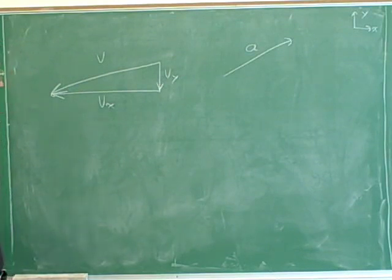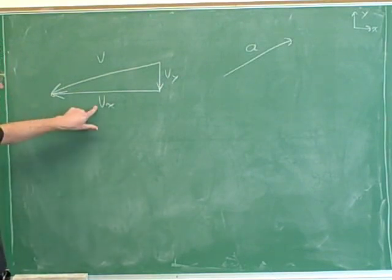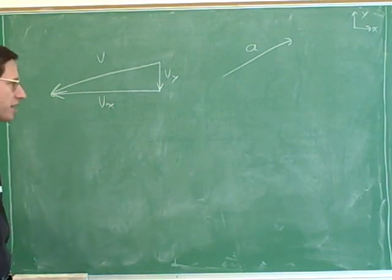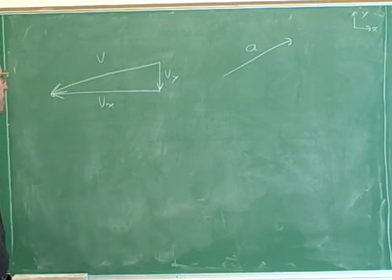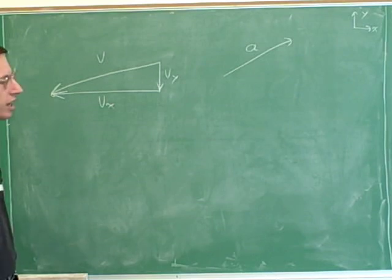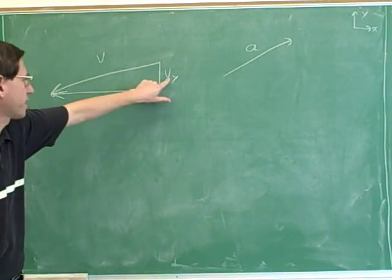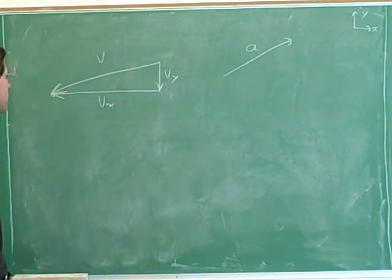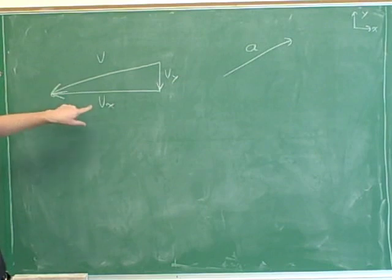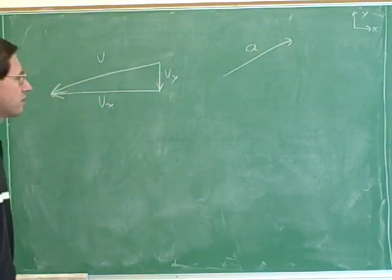Something I wanted to point out here is that the X component is bigger than the Y component. There's nothing that says that the two components have to be the same. Our X component is bigger than our Y component, and it's fair to compare those because they're in the same units. This is in meters per second and this is in meters per second, so we can see that this motion has a bigger X velocity and a smaller Y velocity.